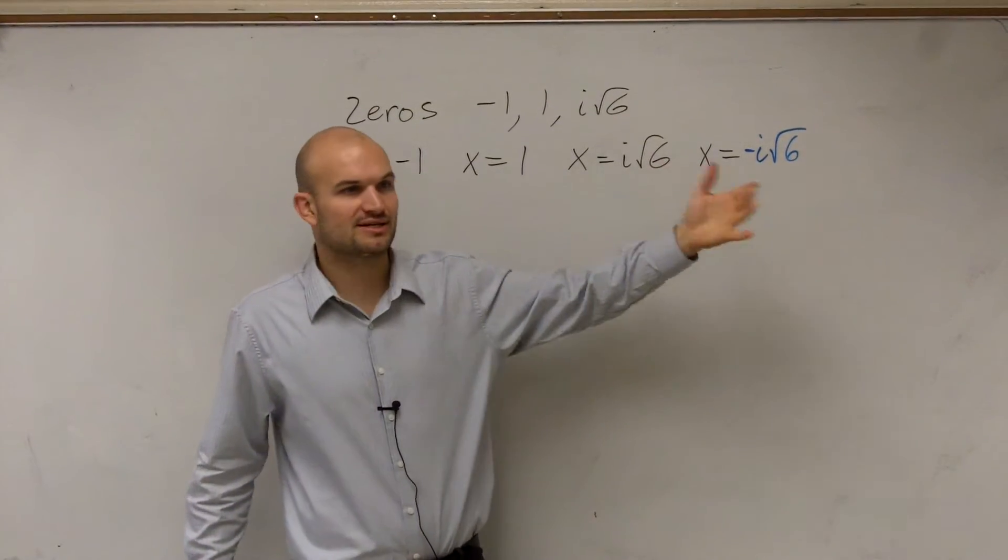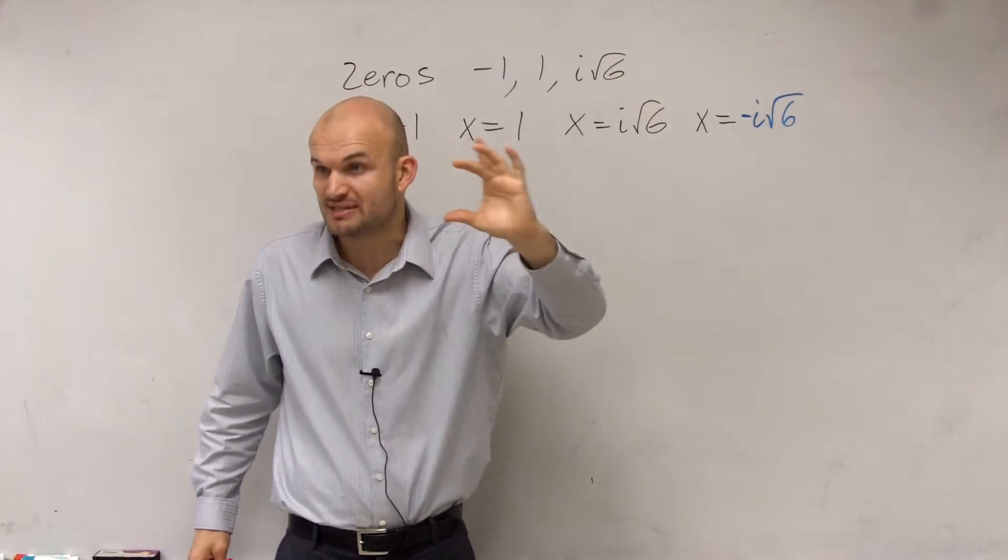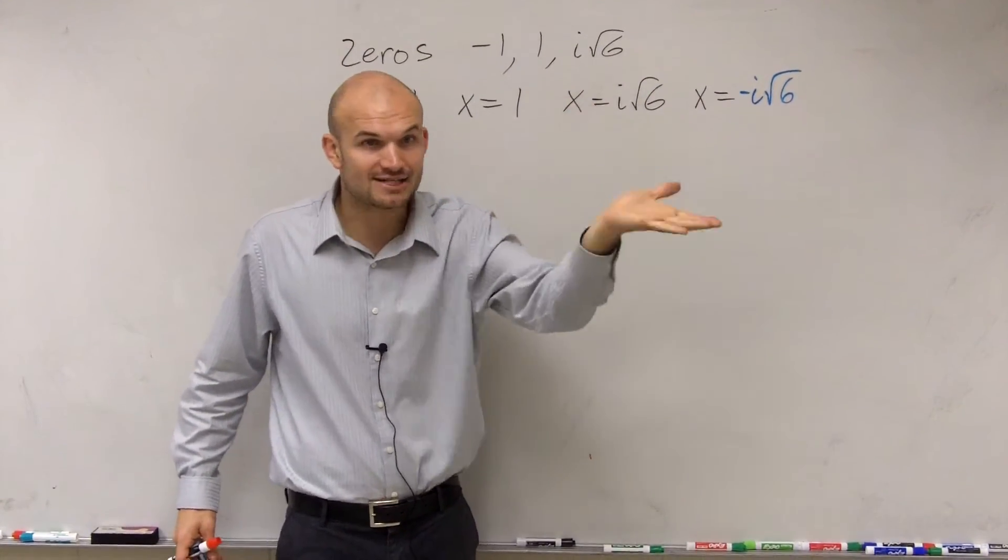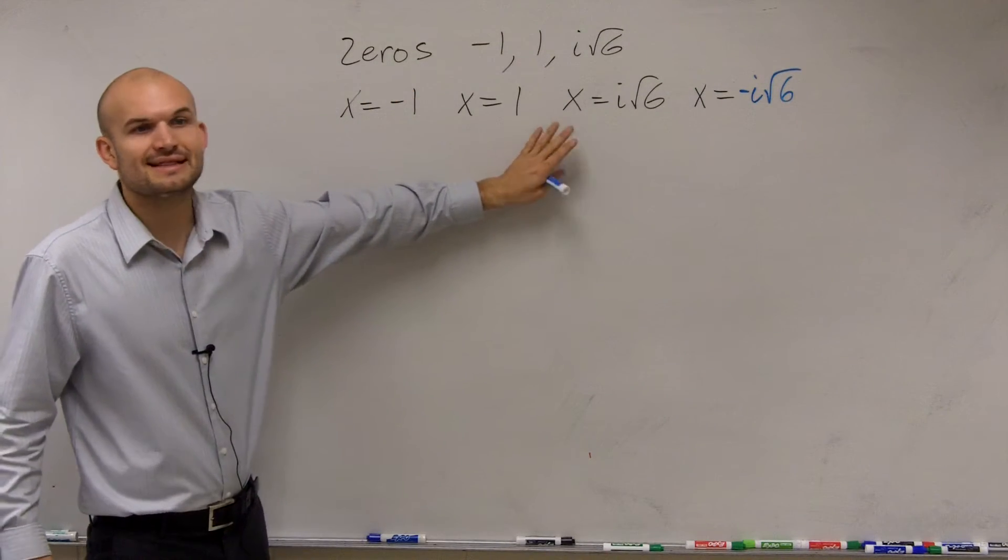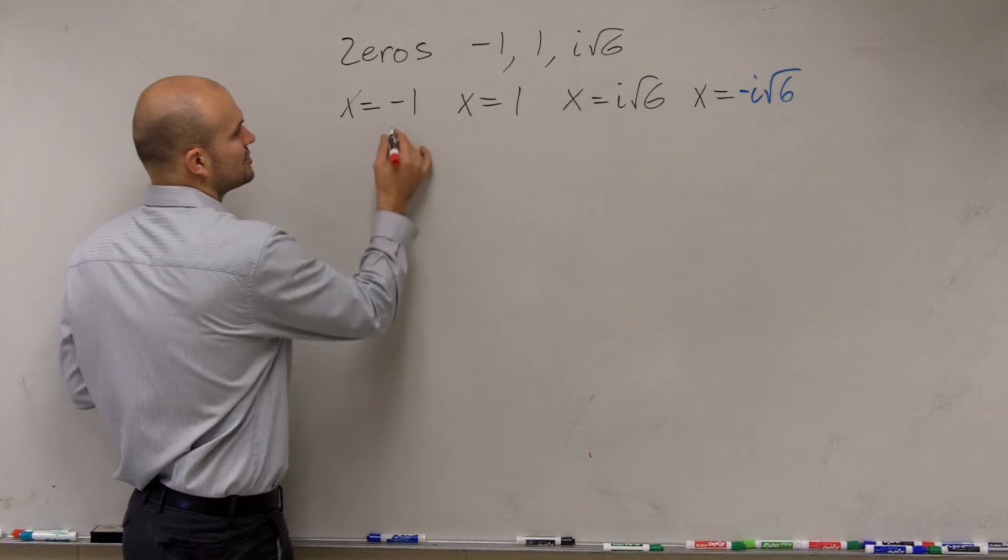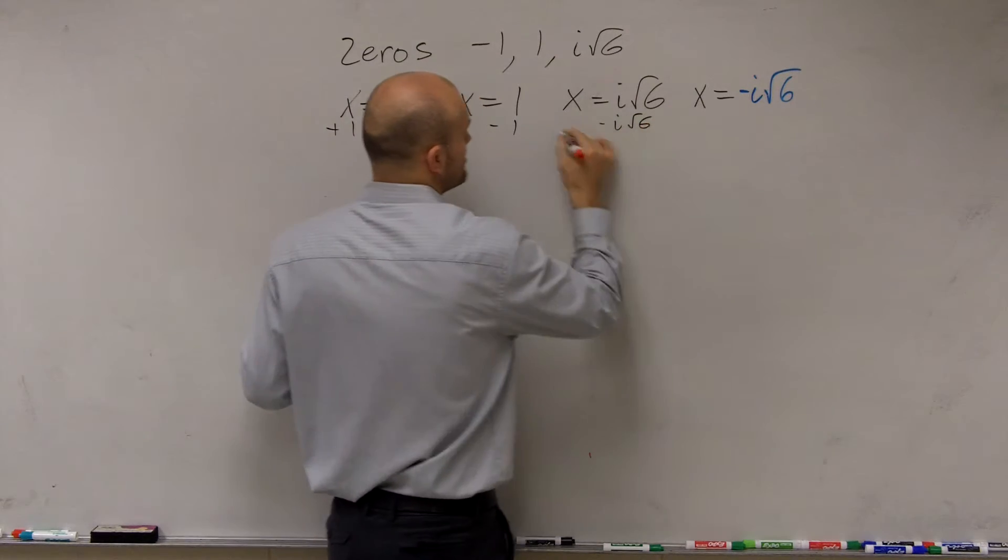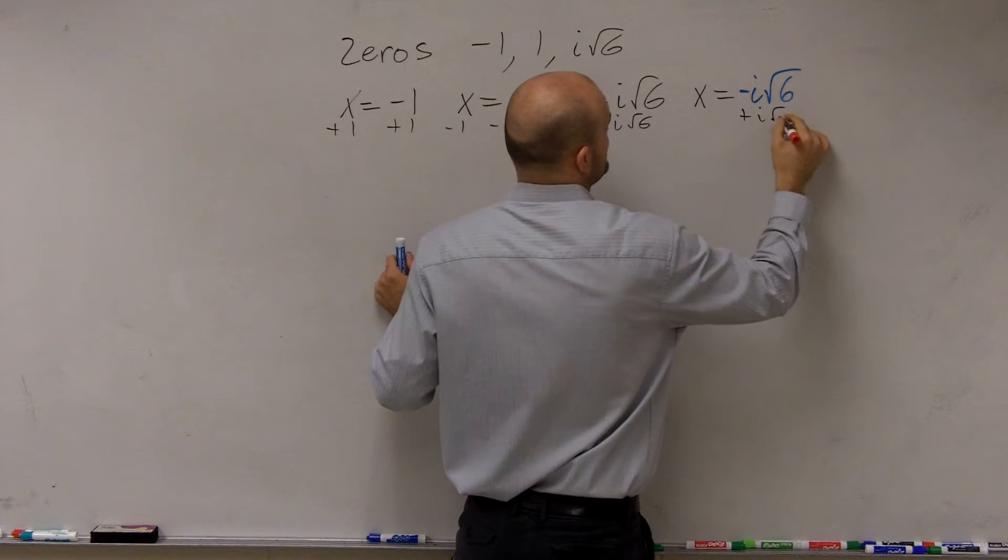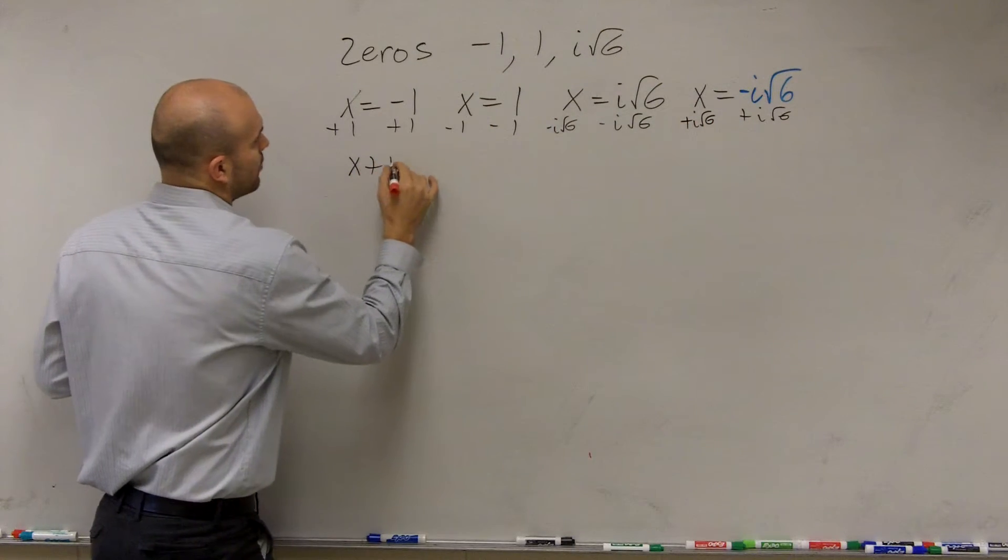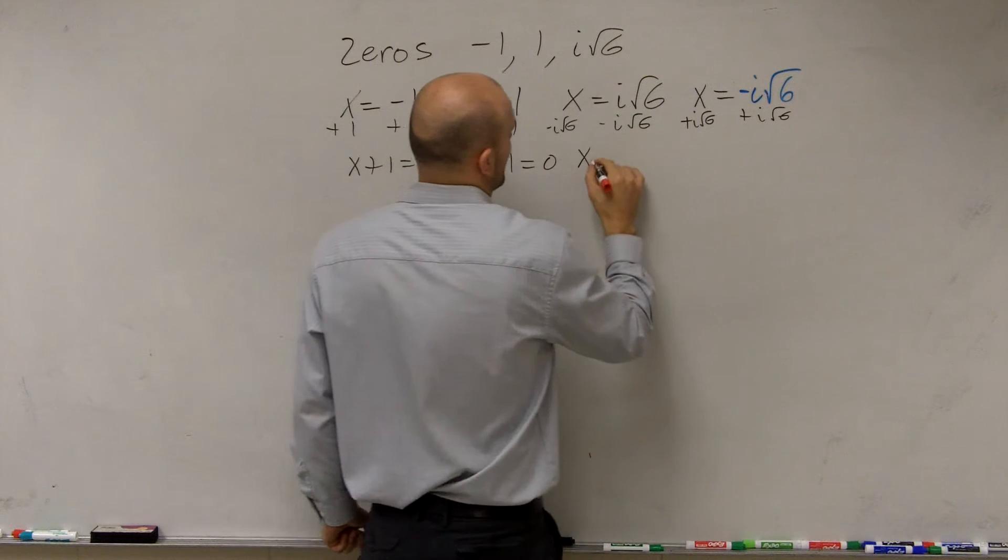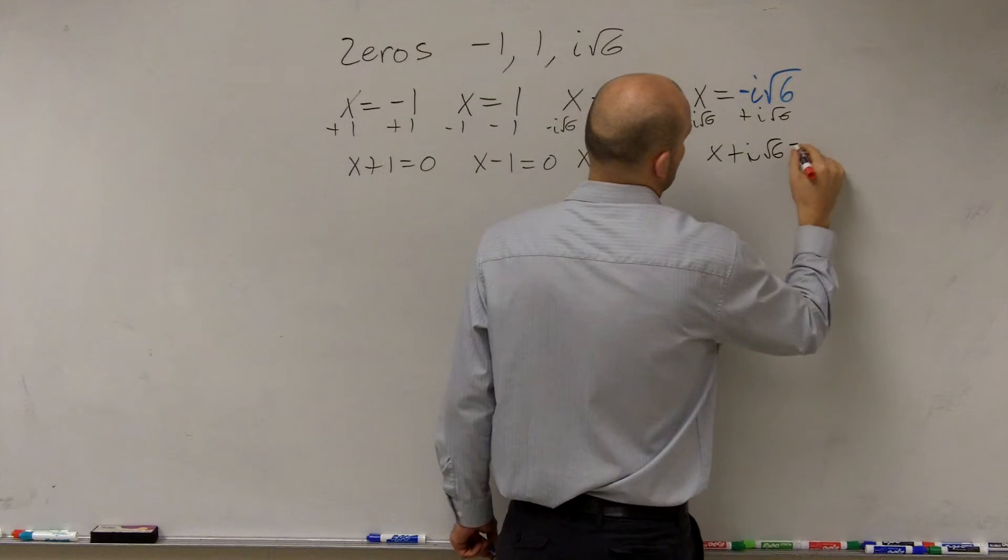So we say x equals all four of these zeros, right? Because when they have the x-intercept, we know we have an x-value where y-value is equal to 0. An x-intercept, x you have a value for, y is equal to 0. So what we're going to do then is let's set these equal to 0. So to do that, I add 1 to both sides, subtract 1 to both sides, subtract i square root of 6 to both sides, and then I add i square root of 6 to both sides. So therefore, I have x plus 1 equals 0, x minus 1 equals 0, x minus i square root of 6 equals 0, and x plus i square root of 6 equals 0.